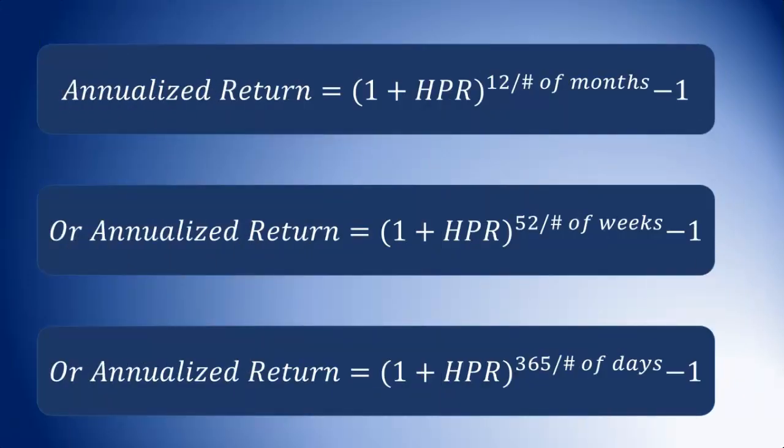So here we go. The annualized return is equal to 1 plus the holding period return — normally used as a decimal — raised to the power of 12 divided by the number of months. After we work that out, we subtract 1 from the answer. If it was weeks, then the power would be 52 over the number of weeks.